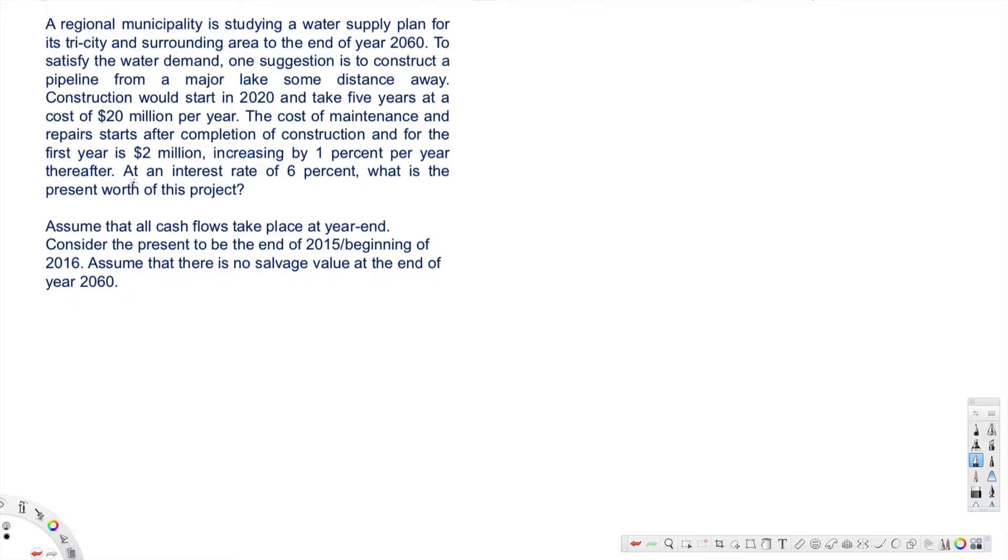At an interest rate of 6%, what is the present worth of this project? Assume that all cash flows take place at year end. Consider the present to be the end of 2015 by beginning of 2016. Assume that there is no salvage value at the end of year 2060.